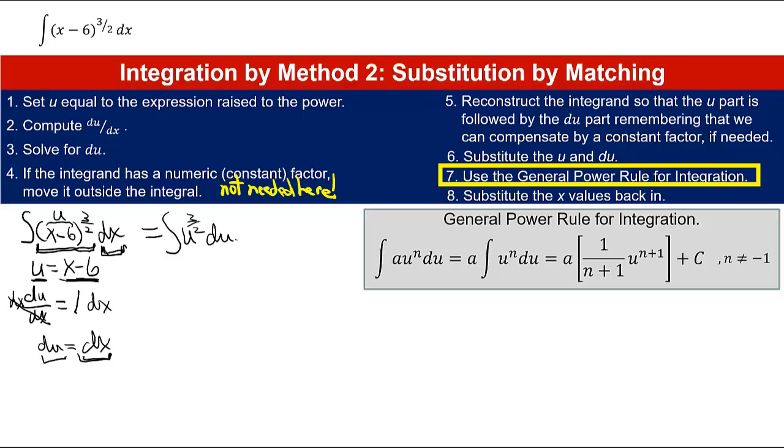That brings up the general power rule for integration. The general power rule for integration tells us exactly how to integrate u to a power. You add 1 to the power, and then you, on the outside, you multiply by the reciprocal of that power. So whatever the power is, you multiply by 1 over that power. So in our case, when we integrate, we add 1 to 3/2.